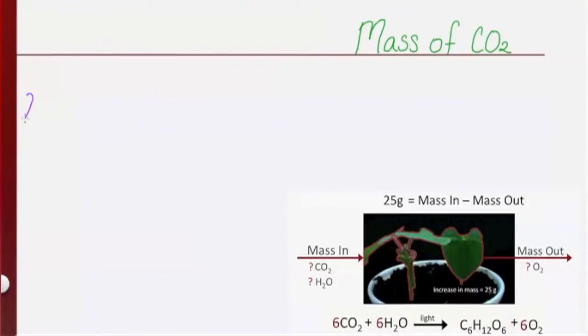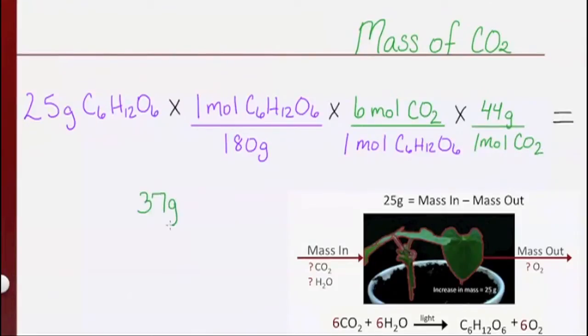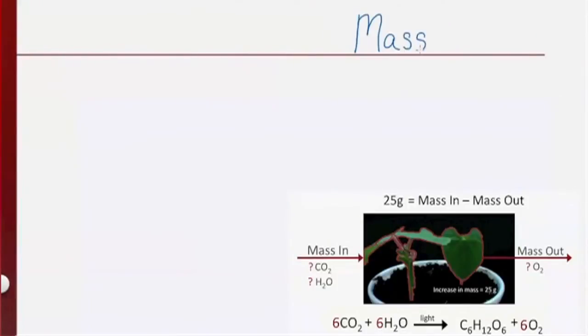Using basic stoichiometry, we can see that 37 grams of carbon dioxide entered the system. 15 grams of water also entered the system.